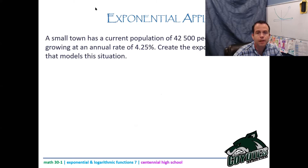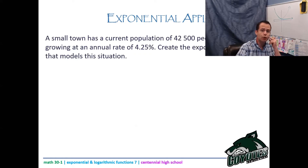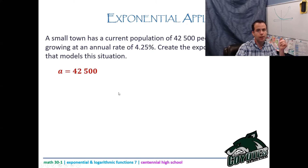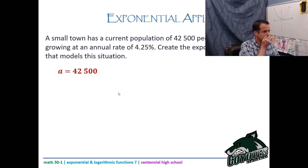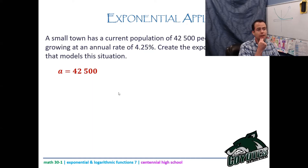A small town has a current population of 42,500 growing at an annual rate of 4.25%. Create the exponential function. The a value is clearly 42,500, but we need to talk about the b value. Many of you might say b = 4.25 — it's not, and here's why.